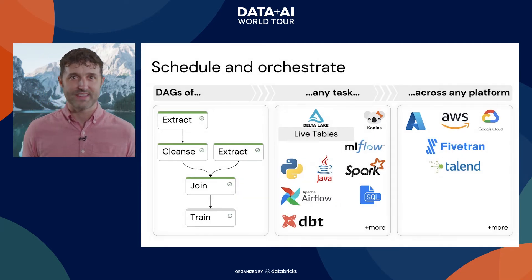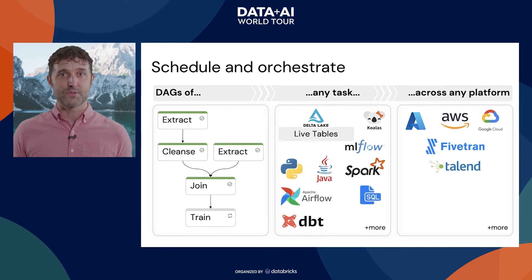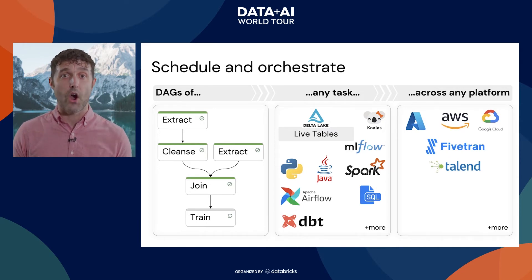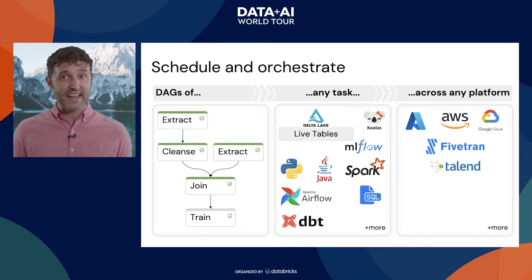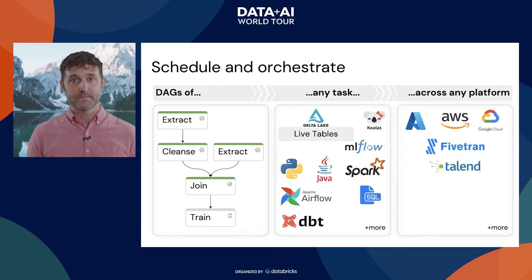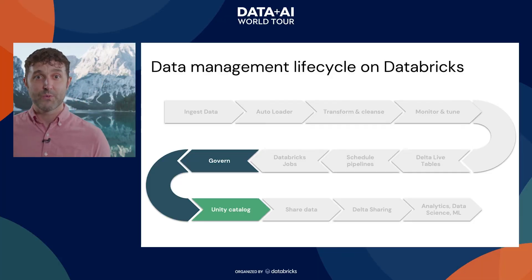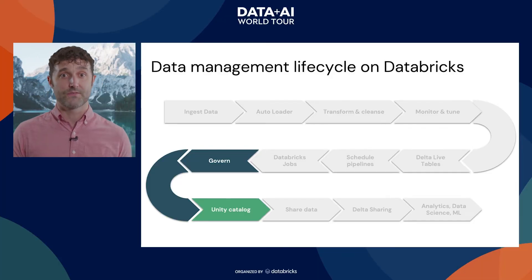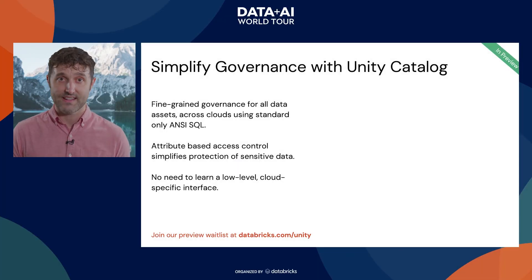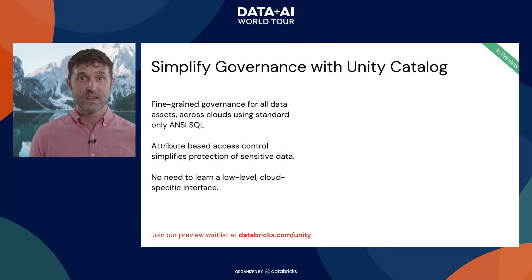To summarize, the job scheduler allows you to schedule and orchestrate DAGs of arbitrary task types across any platform where you're working with data. Now that we've produced these data assets and they're being regularly updated, we need to make sure we govern the results — and this is where Unity Catalog comes in.